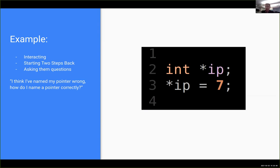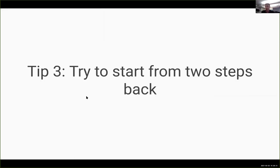The only way to build that up is by asking questions — like 'what is ip pointing to?' or 'what memory are we trying to set equal to seven?' You're probing their understanding and getting them to think about their mental model. The biggest takeaway is: try to start not just at the thing itself but a little bit further back, building up to the question they asked, so when they get the answer they really understand it — built on a solid foundation.